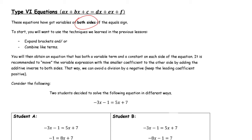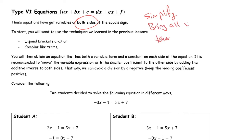What we're going to need to do is simplify, and then bring all x terms — really just variable terms — to one side so that we can solve for the variable.